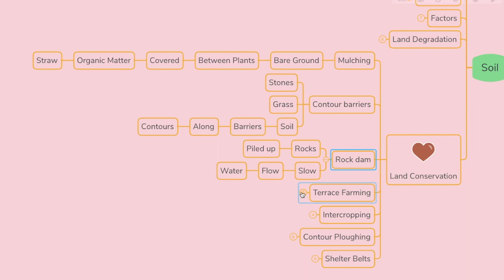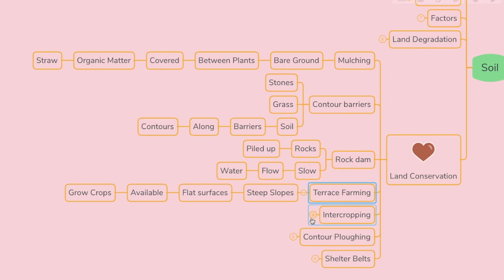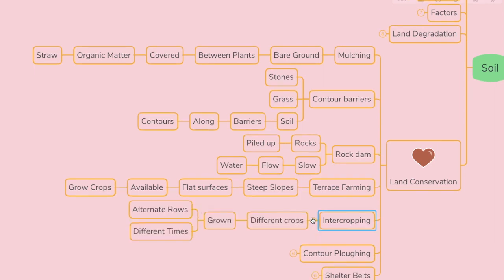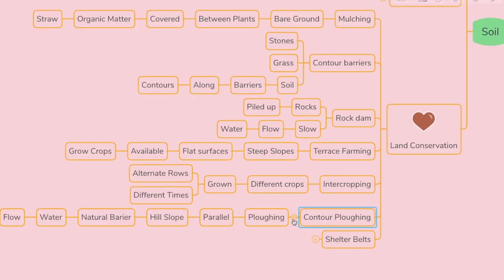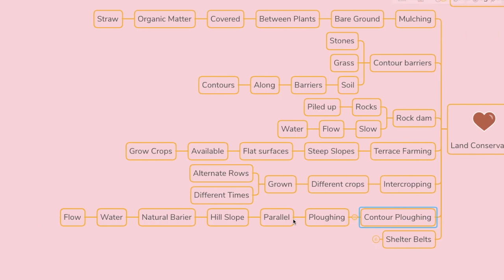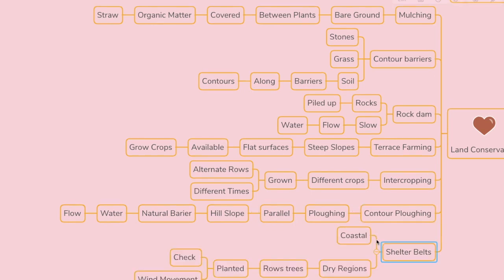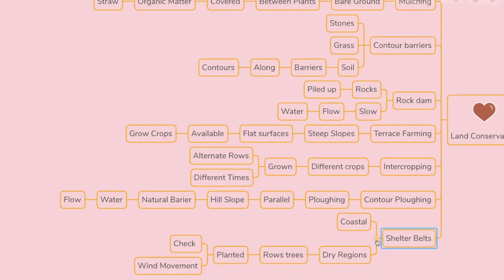Next is terrace farming — terraces are made on steep slopes so that flat surfaces are available to grow crops; they reduce surface runoff and soil erosion. Moving on to intercropping — different crops are grown in alternate rows and are sown at different times of the year to protect soil from rainwash. Contour plowing means plowing parallel to the contour of a hill slope to form natural barriers for water flow. Finally, shelter belts — in coastal and dry regions, rows of trees are planted to check wind movement and protect soil cover.